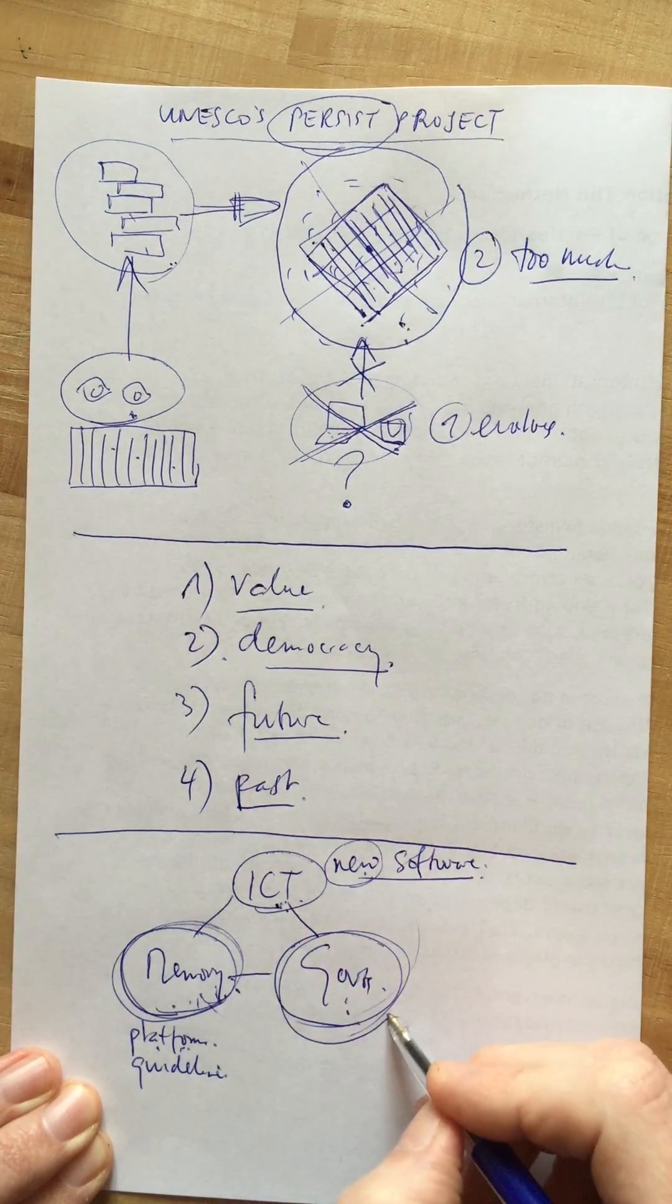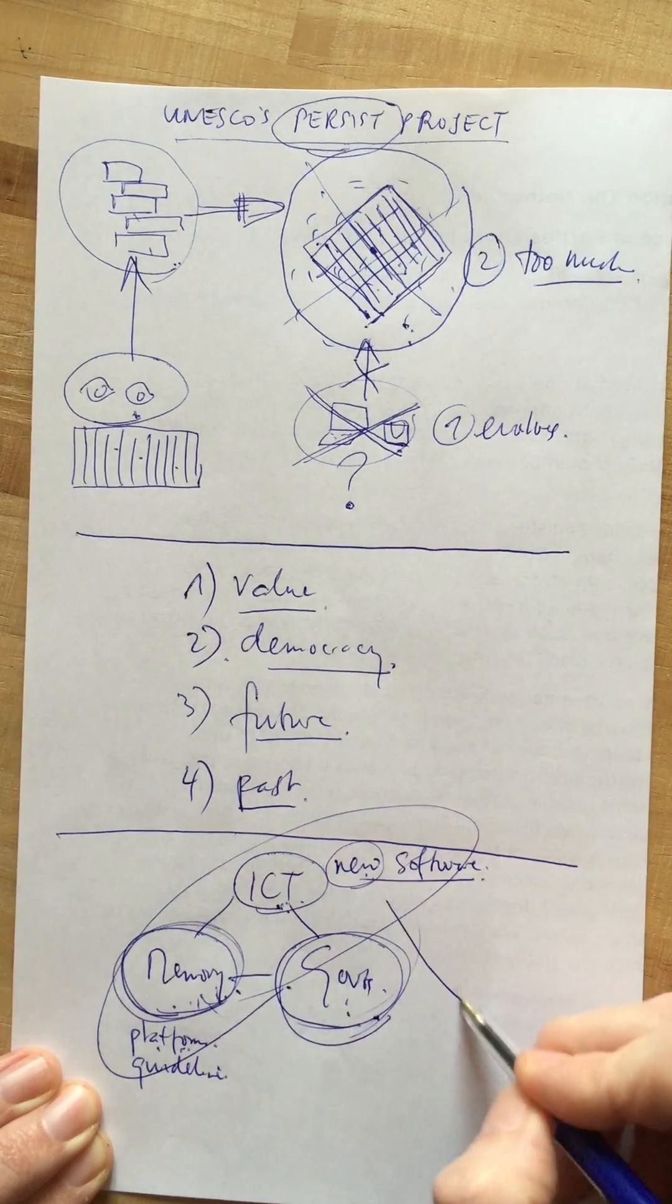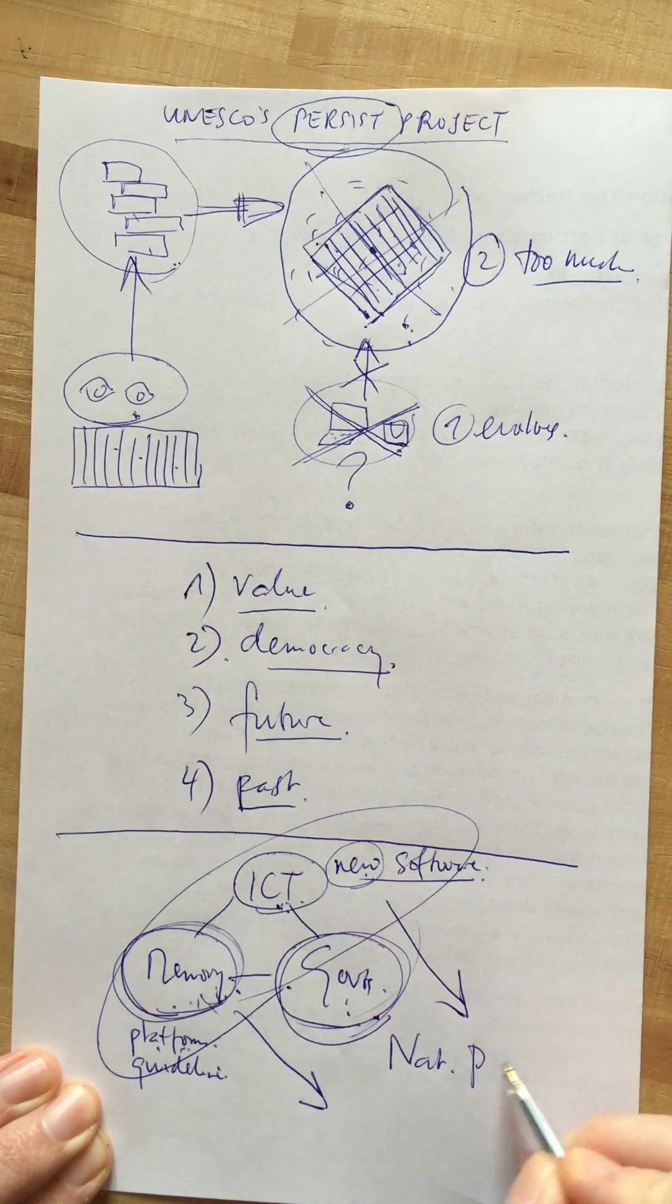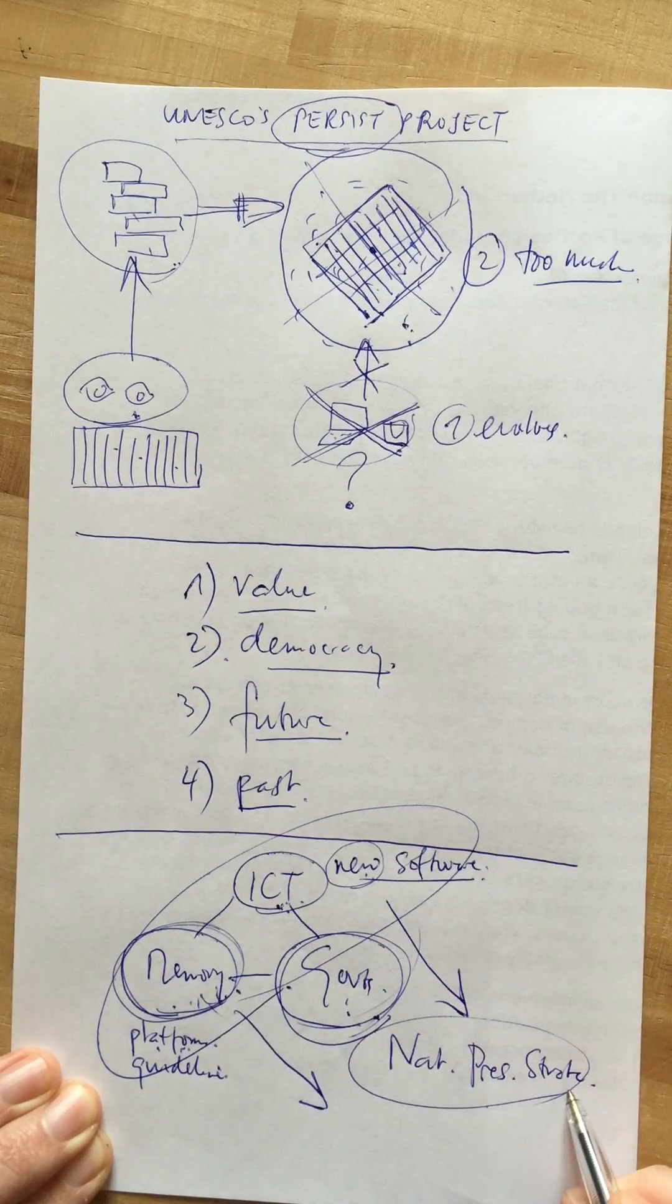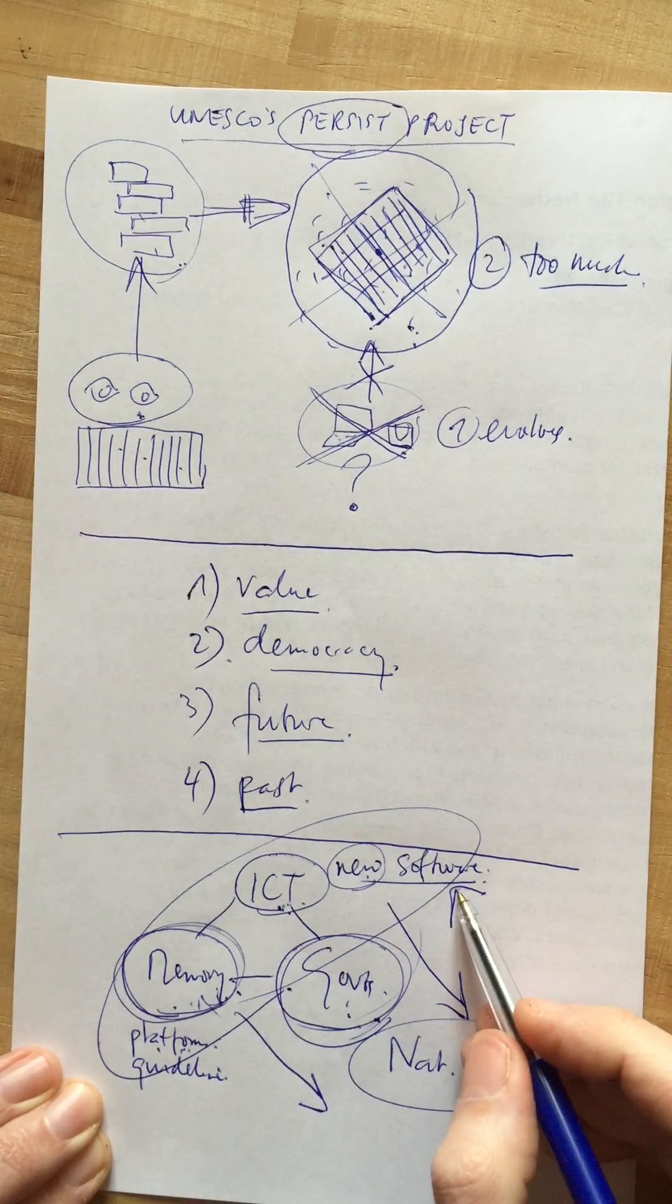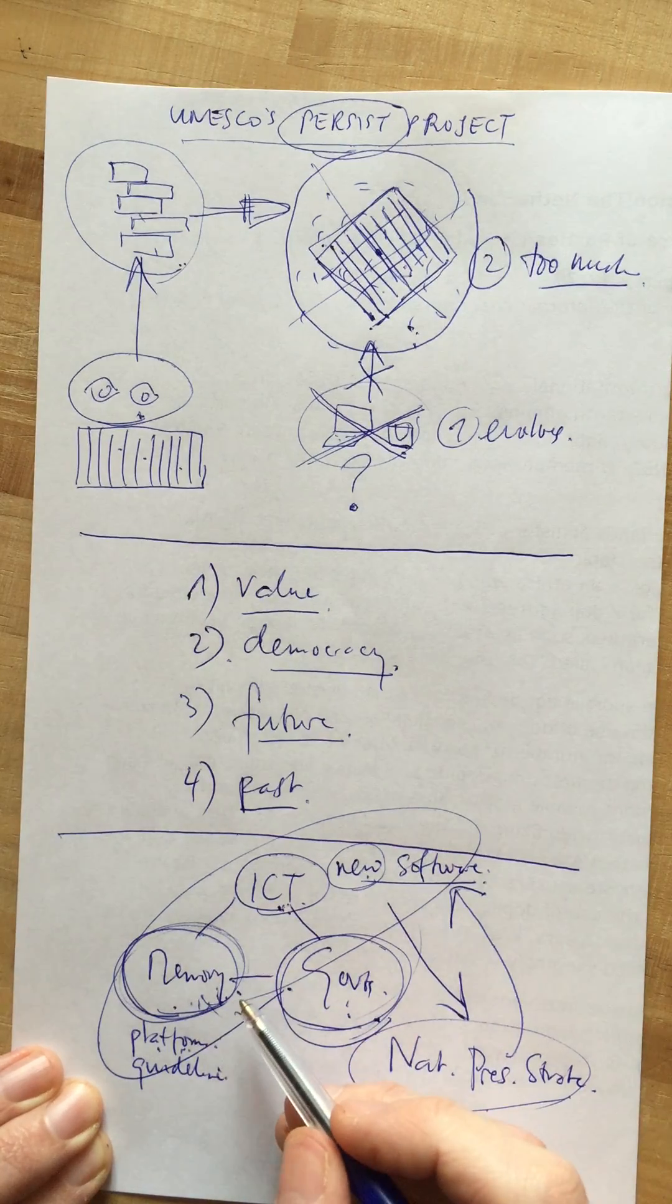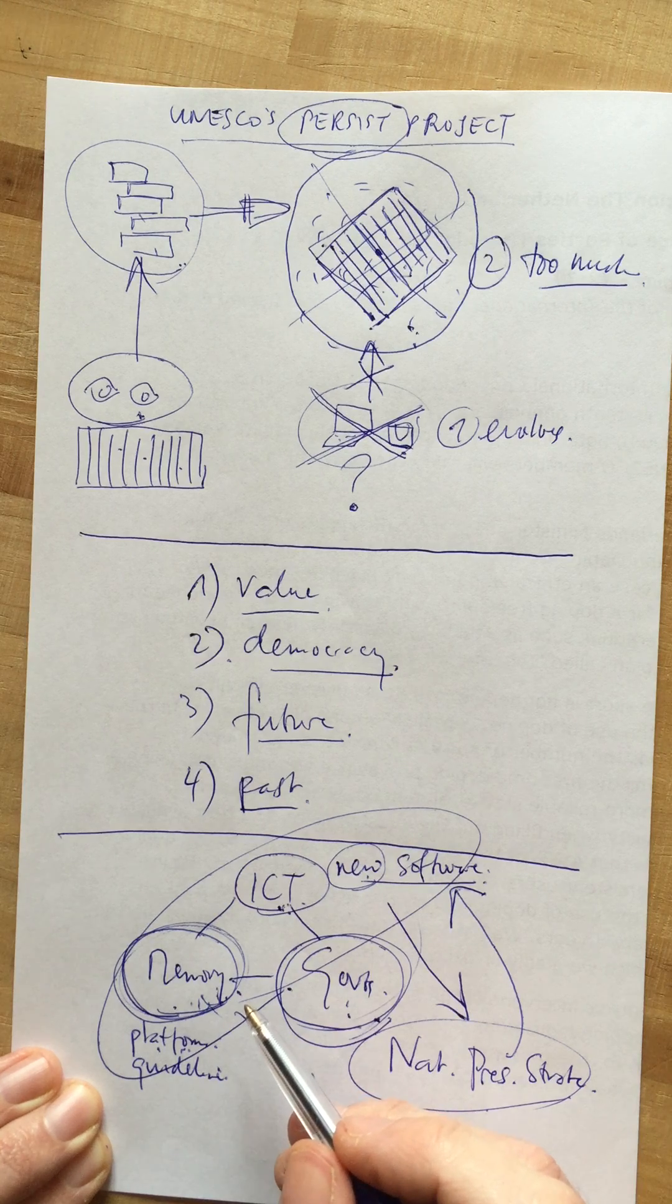And then lastly, governments need to learn from these best practices so that they can integrate them in national digital preservation strategies. And these strategies can then be used to support and facilitate the production of digital information in such a way that memory institutions have an easier job to preserve it and keep it accessible for the future.